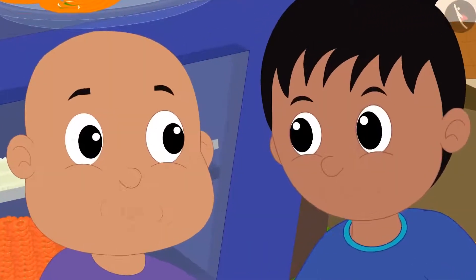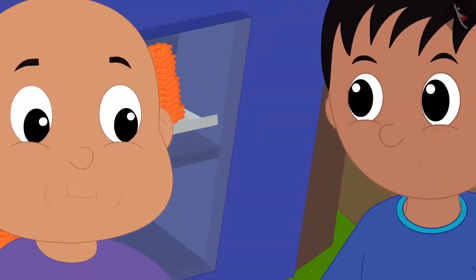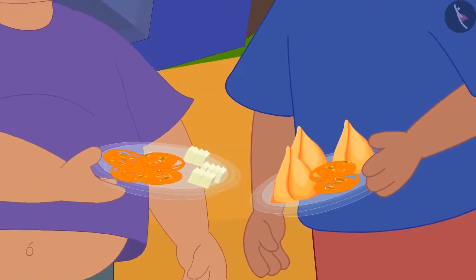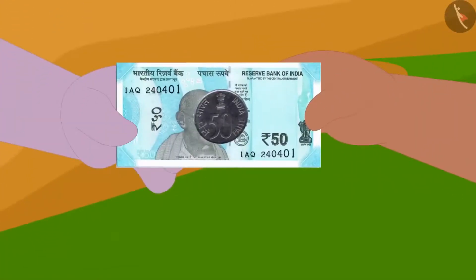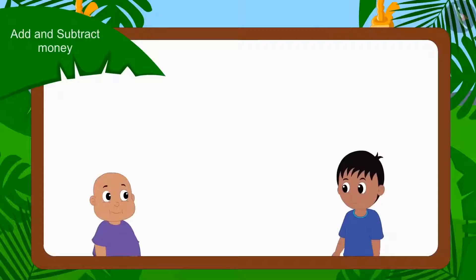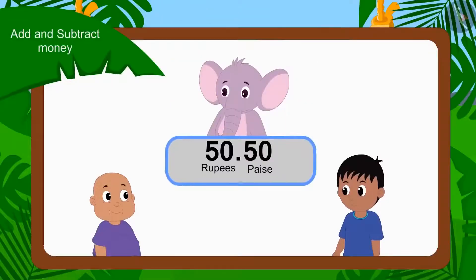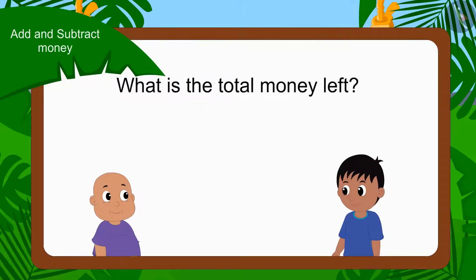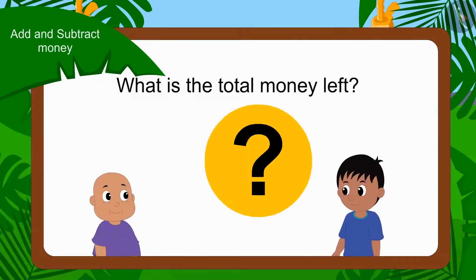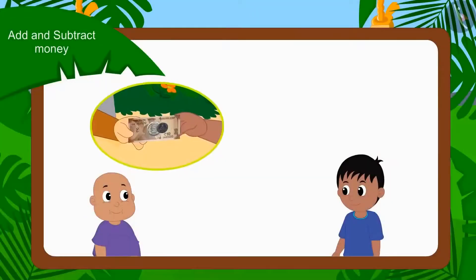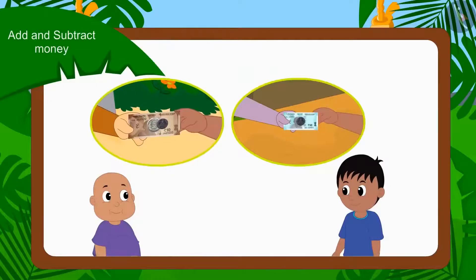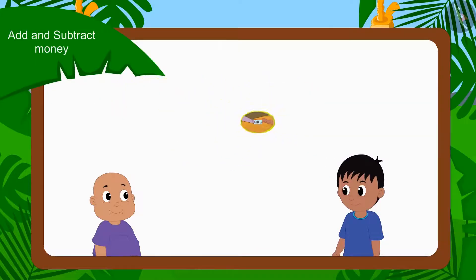They ate a stomach full of samosa, jalebi and barfi. If they gave Appu a total of 50 rupees 50 paise for all the things, can you tell how many rupees are left with both of them now? First, we will find out the total amount spent by both of them. Children, can you add these two amounts and tell how much money Raju and Bablu have spent together?